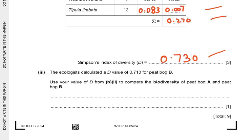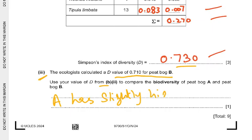Part 3: The ecologist calculated a D value of 0.710 for peat bog B. So D = 0.730 for A and 0.710 for B. Using your value from part B2, compare the biodiversity of peat bog A and peat bog B. Peat bog A has slightly higher biodiversity than B.